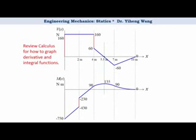Review calculus if you need to. From these diagrams, we can tell the absolute maximum shear force in this member is 160 N, and the absolute maximum bending moment in this member is 750 N·m. These values will become very useful in structural design and material strength analysis. Thank you.